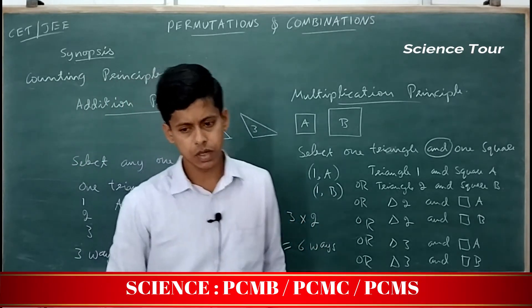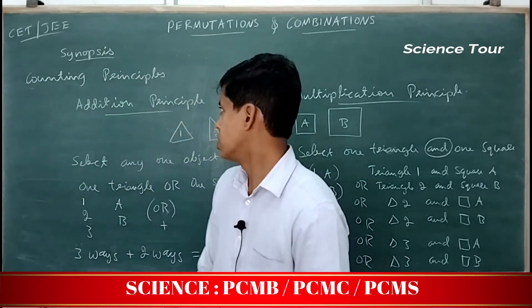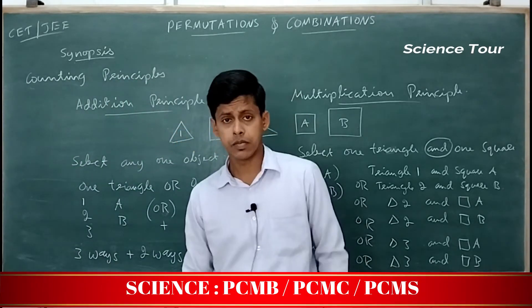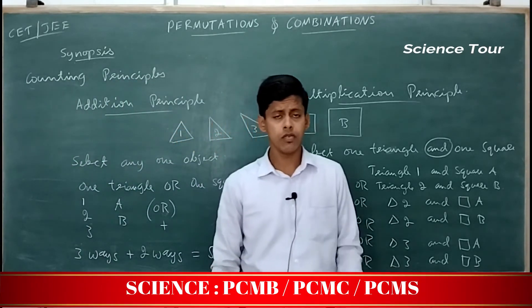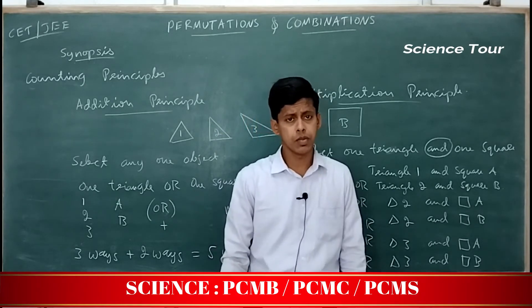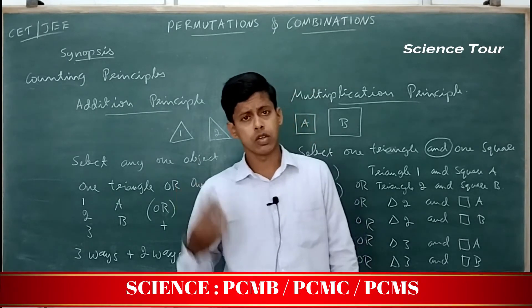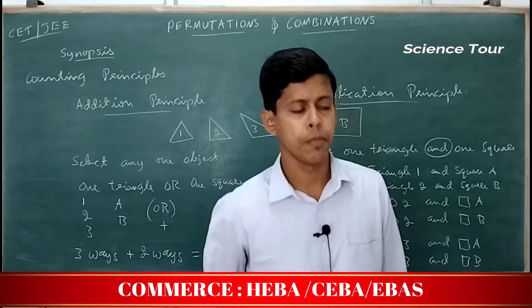If you have the word 'and', you multiply. Three ways into two ways gives six ways. Here you have three ways 'or' two ways — addition. Here you have three ways 'and' two ways — multiplication. The word 'or' versus 'and' makes the difference whether you add or multiply. That is about the counting principle.